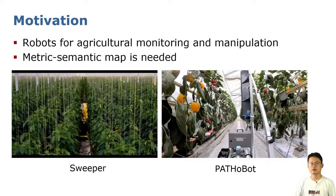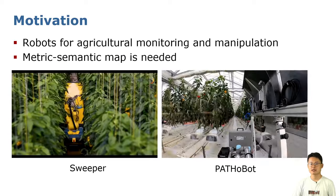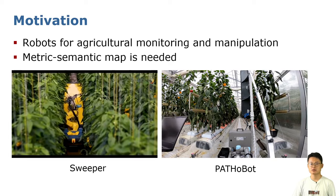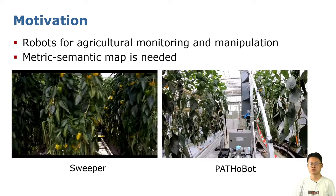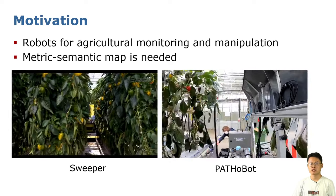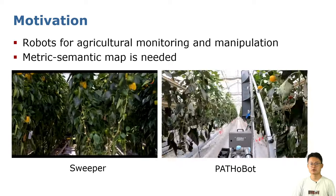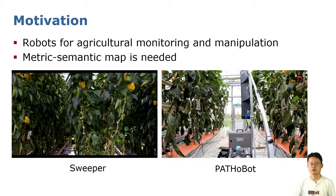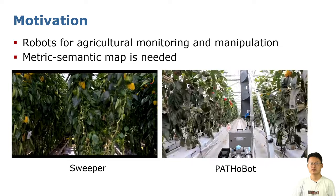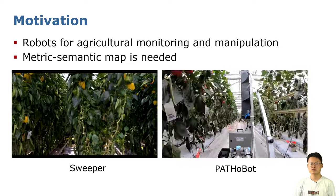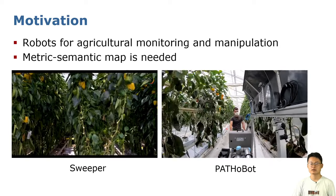To feed an ever-growing world population, mobile robots have been playing a more and more important role in agriculture monitoring and manipulation in the greenhouse, such as the sweeper robots from WR and Puzzle Ball from Uniborn. For those tasks, the fundamental part is to build a metric semantic map with high definition.